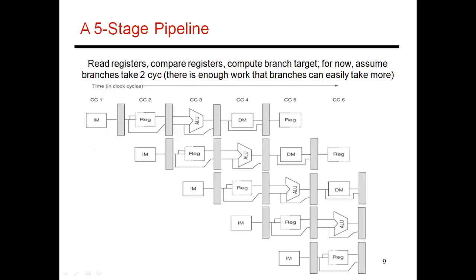Now let's talk about what happens in the second stage. You have fetched an instruction and placed it in this latch. The second stage is broken up into two sub-stages — this is a somewhat aggressive assumption, but I'll make it for now. In the first half you do decode and in the second half you do register read. In decode, I examine that instruction and figure out what exactly I'm trying to do. For example, that instruction could be an add of r1 plus r2. Then in the second half, having now known that I need the values of r1 and r2, I read those values from the register file. That read happens in this second half.